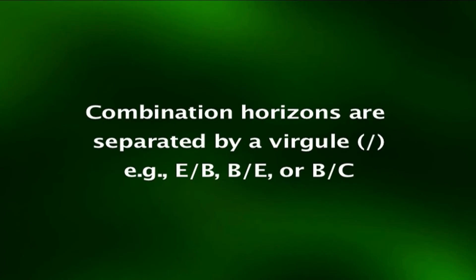For example, a BC horizon may be recognized even if no underlying C horizon is present. The second kind of transition horizons have two distinct parts that have recognizable properties of two master horizons indicated by the capital letters. The two capital letters designating such combination horizons are separated by a virgule, like E/B or B/C.